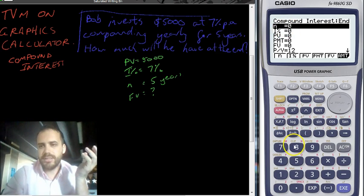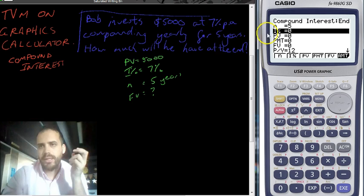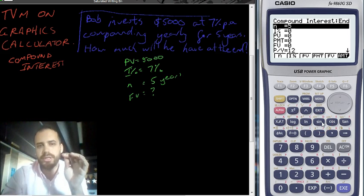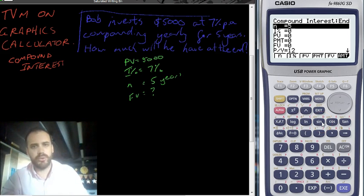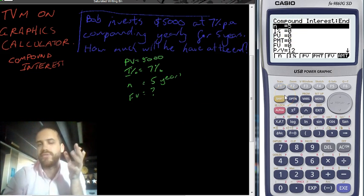N. N stands for number of periods. That's going to be really important. N stands for number of periods. So in this case it is 5.